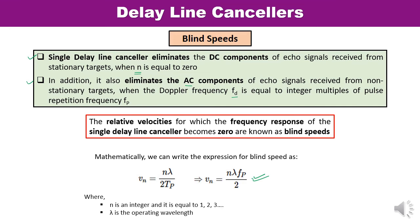The operating wavelength λ = c/f. There are certain limitations of blind speed, and these can be reduced by applying certain methods. First, operate with a higher pulse repetition frequency. Second, operate with more than one pulse repetition frequency. Third, operate with more than one RF frequency. Another technique is operating the radar at a very long wavelength, meaning a low frequency. With these approaches, the limitations of blind speed can be overcome.